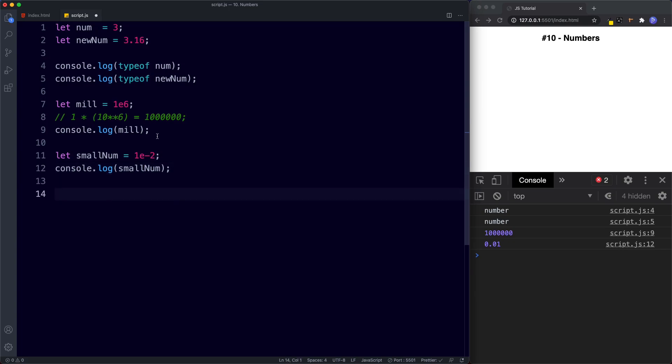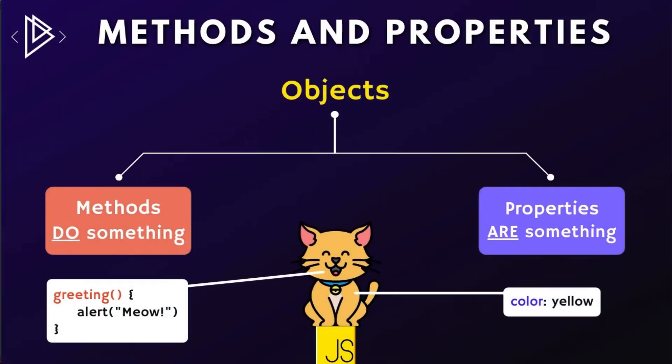Before we move on we need to quickly refresh what we mean by methods and properties. There are two main types of data in JavaScript: primitives and objects. Objects have methods and properties. A method does something — methods are basically blocks of code that perform an action — whereas properties are values; they are something. You might be asking why we need to know all this now if only objects have methods and properties, since numbers are primitives and don't have methods or properties.